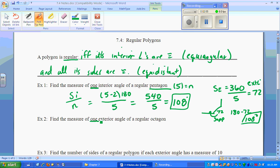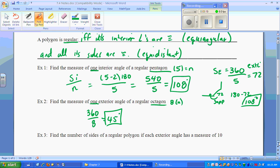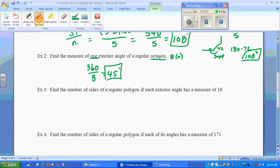Number 2, find the measure of one exterior angle of a regular octagon. An octagon has eight sides. So we have 360 divided by 8, giving us 45 degrees. Booyah. That's nice. Those are the questions you want to have more of.